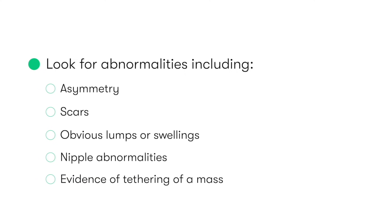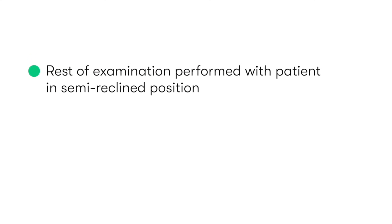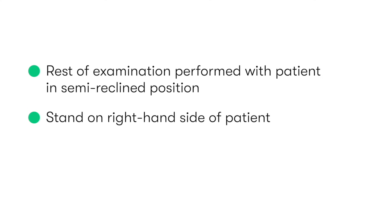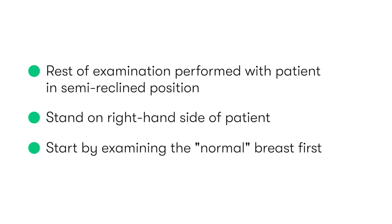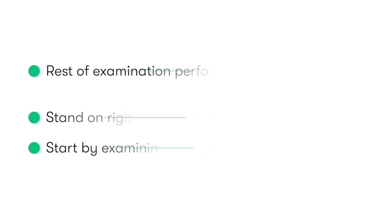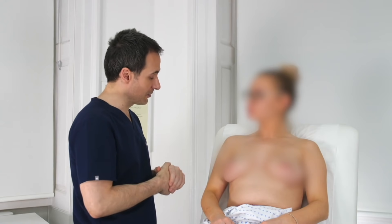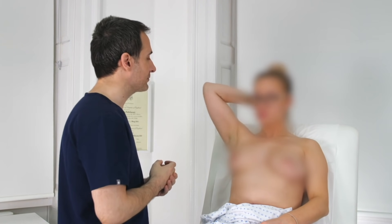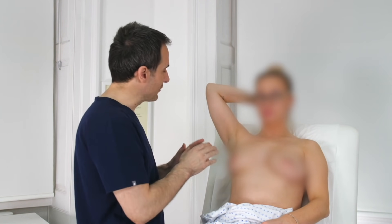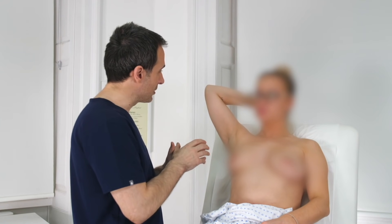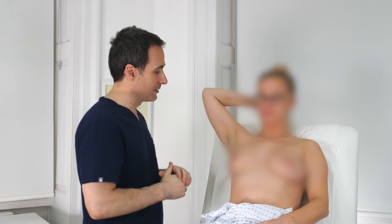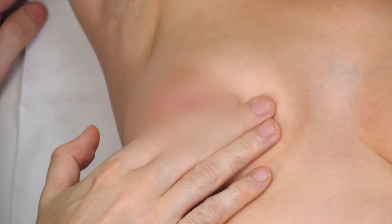The patient is then asked to lie in a semi-reclined position, and we position ourselves on their right-hand side so that we can then continue the rest of the examination. If the patient has reported any specific abnormality, then we should start by examining the normal breast first. We ask the patient to place the hand of the side we are examining behind their head, and inform the patient that palpation should not be painful, but that if they do feel any discomfort, they should let us know.